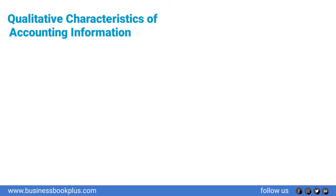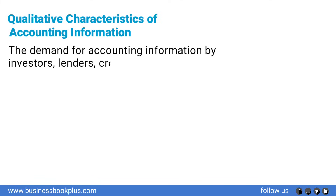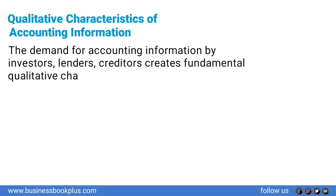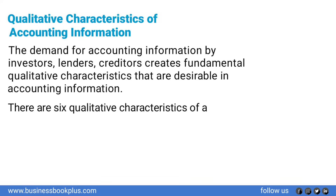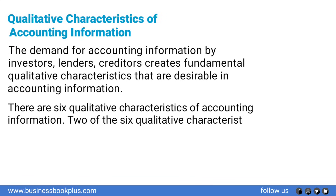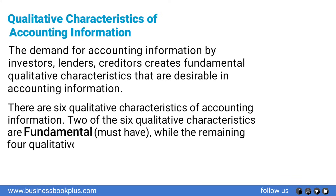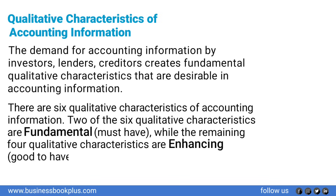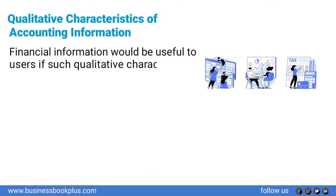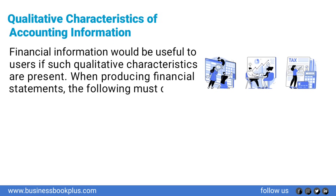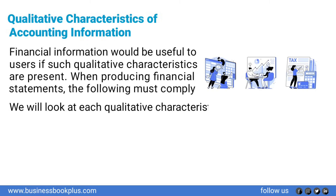The demand for accounting information by investors, lenders, and creditors creates fundamental qualitative characteristics that are desirable in accounting information. There are six qualitative characteristics of accounting information. Two of the six are fundamental — that is, must-have — while the remaining four are enhancing, meaning good to have. Financial information would be useful to users if such qualitative characteristics are present when producing financial statements.